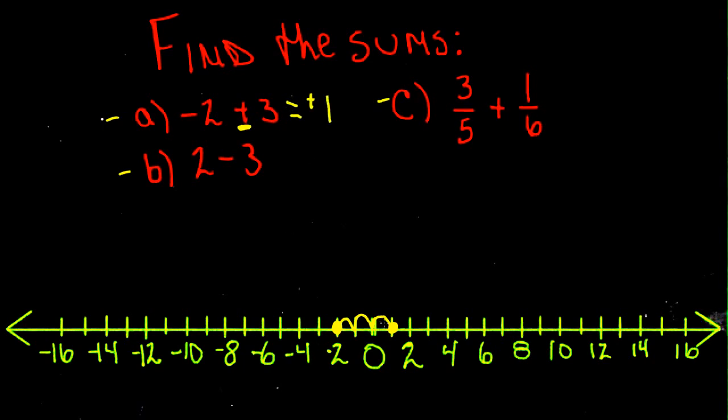You can see that sometimes using a number line can make something confusing like adding and subtracting negatives much easier.